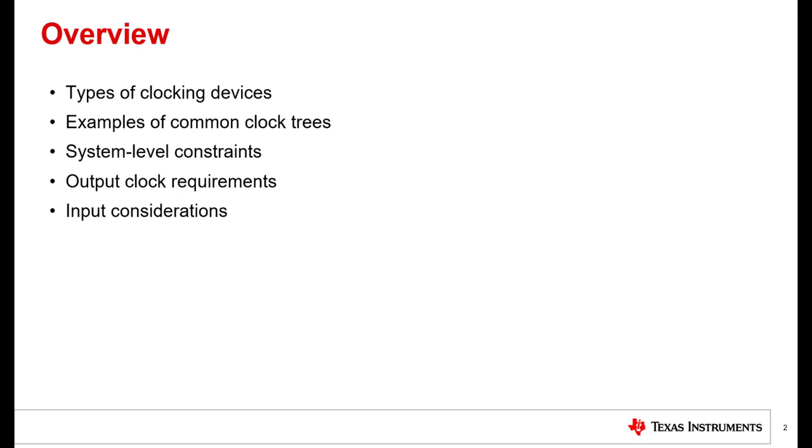After that, let's focus on system-level aspects of clock tree design which include power, area, price, and reliability. Following that, we will discuss output and input clock requirements such as synchronization, frequencies, formats, jitter, and number of outputs needed.